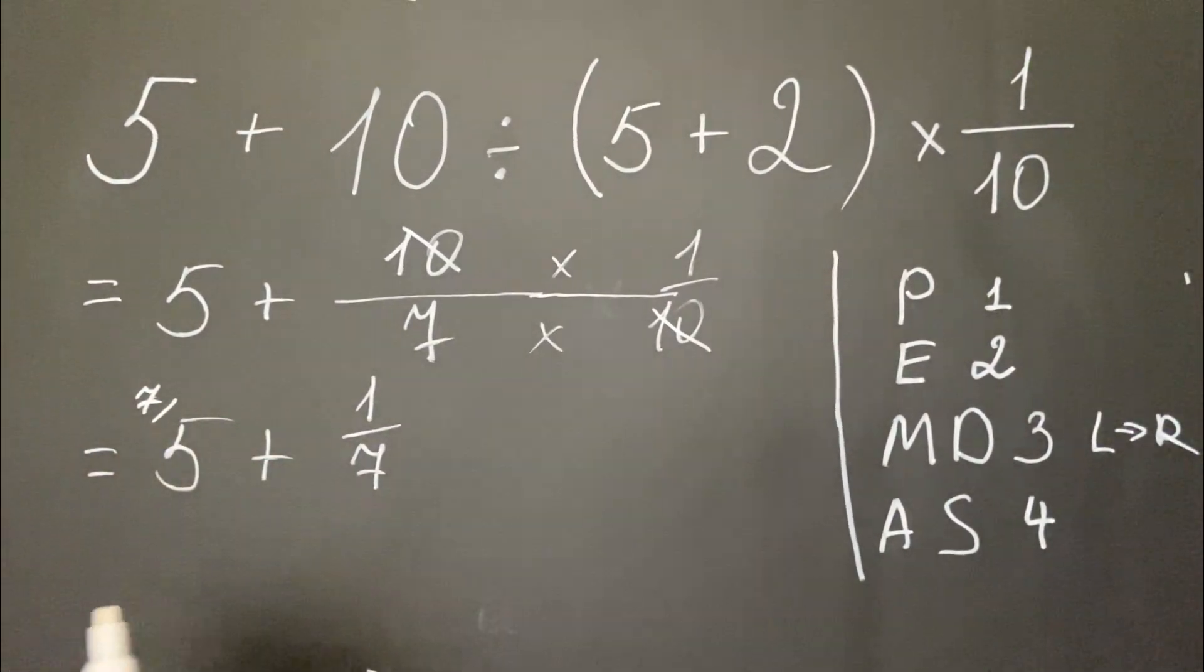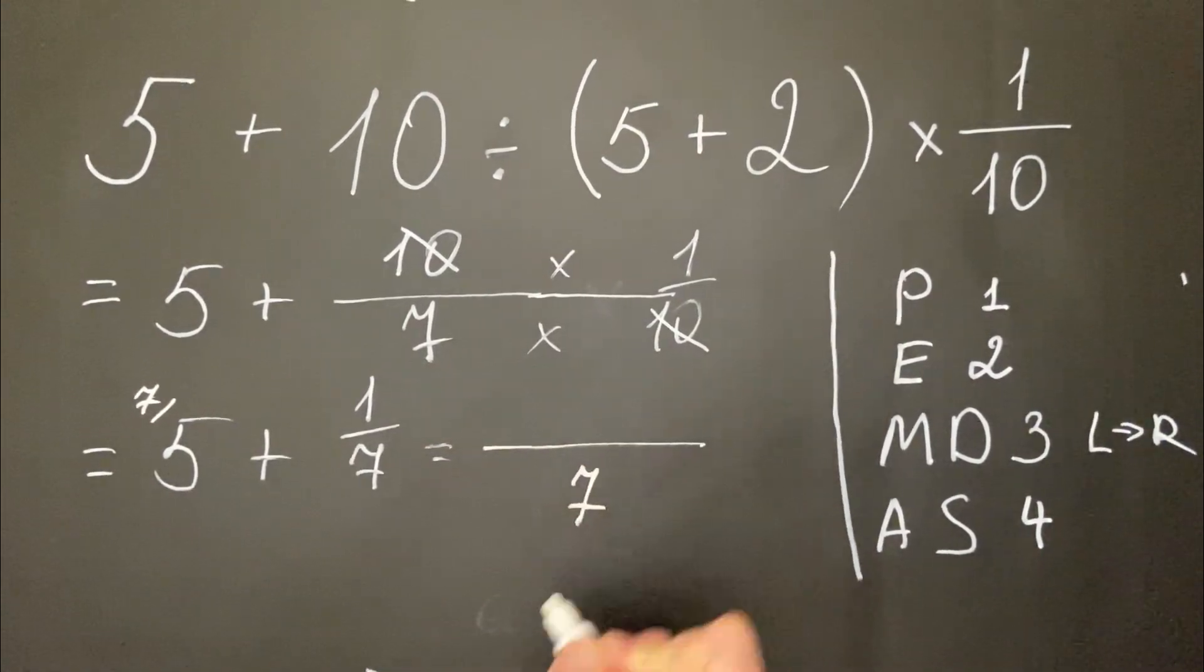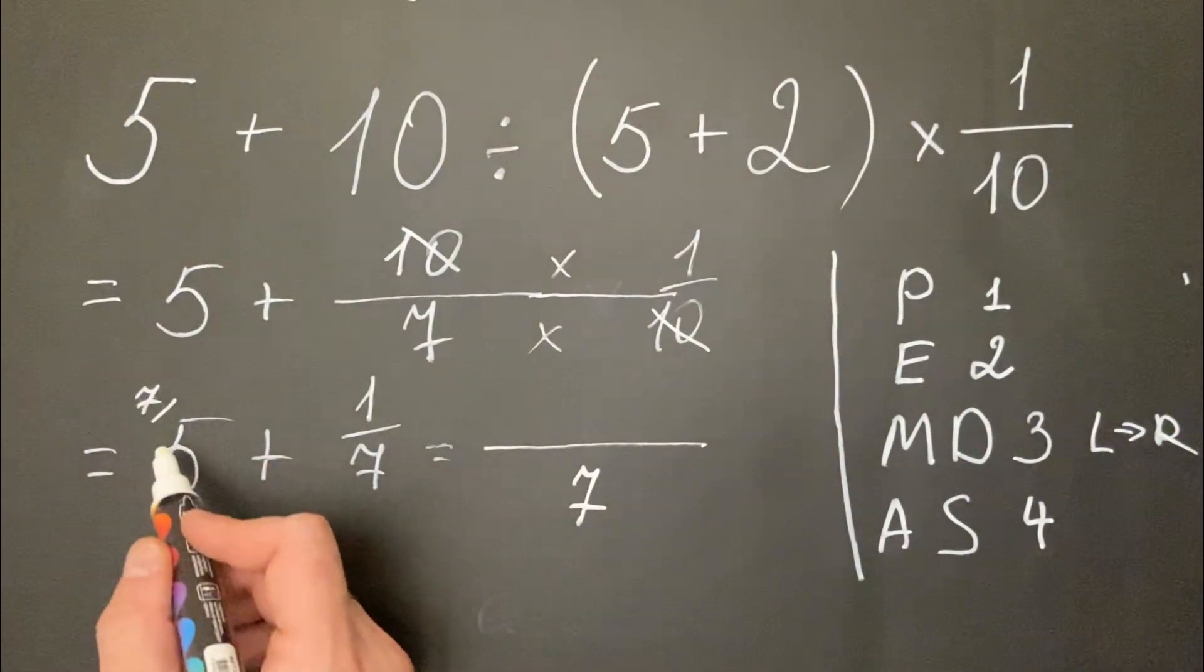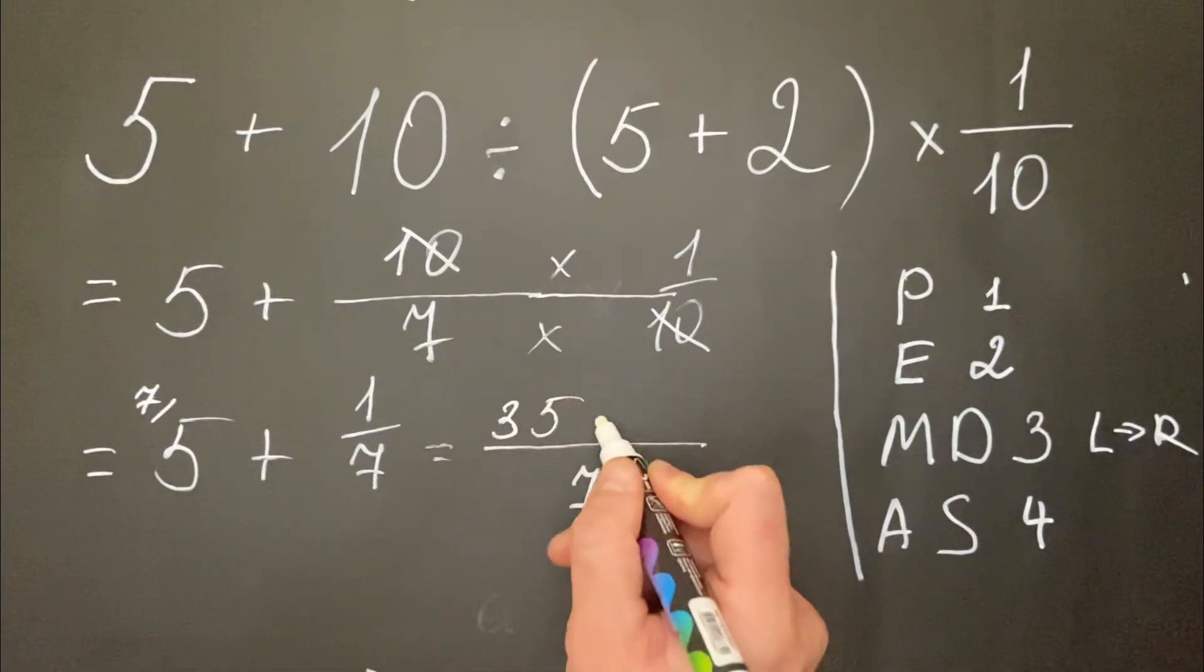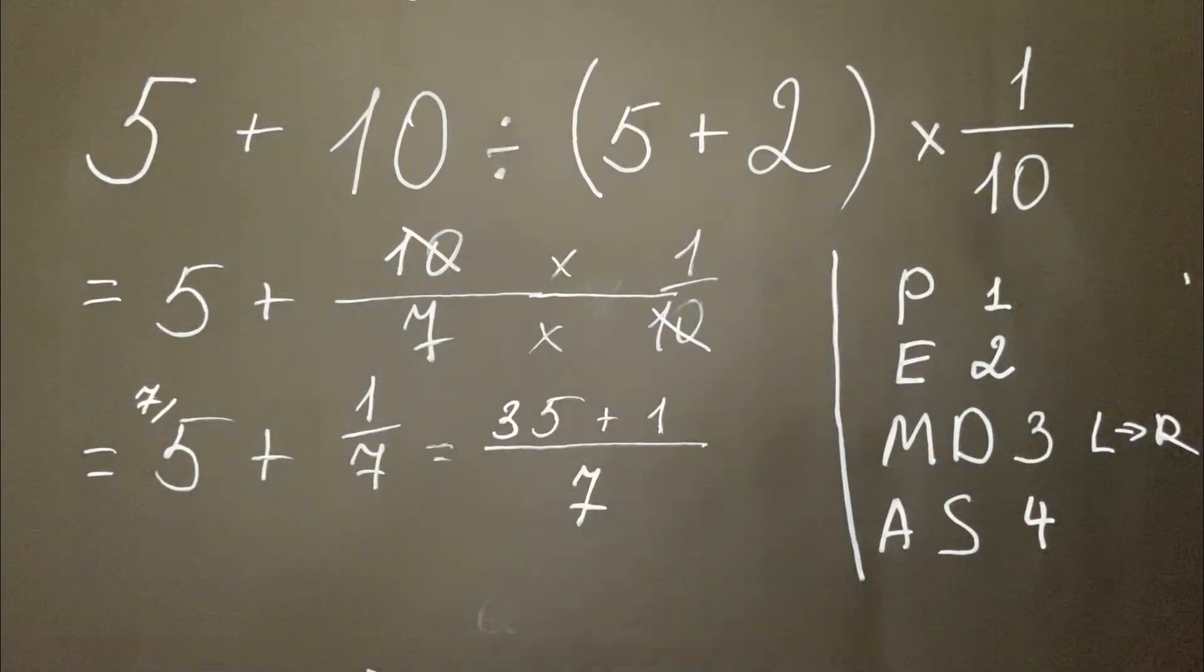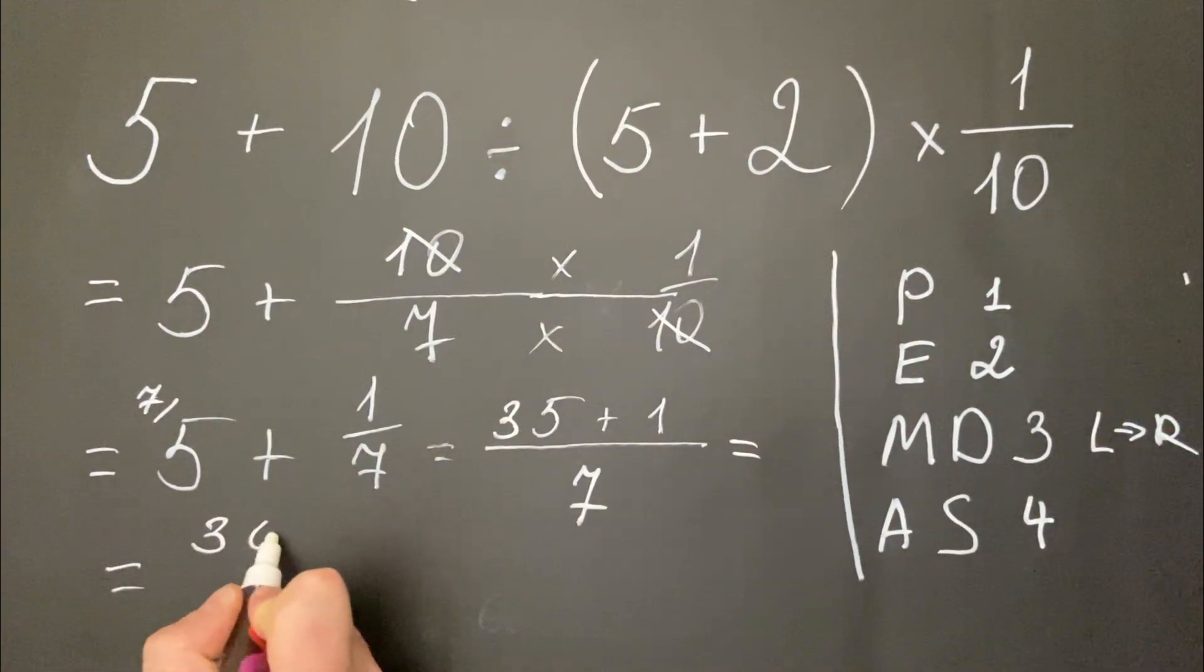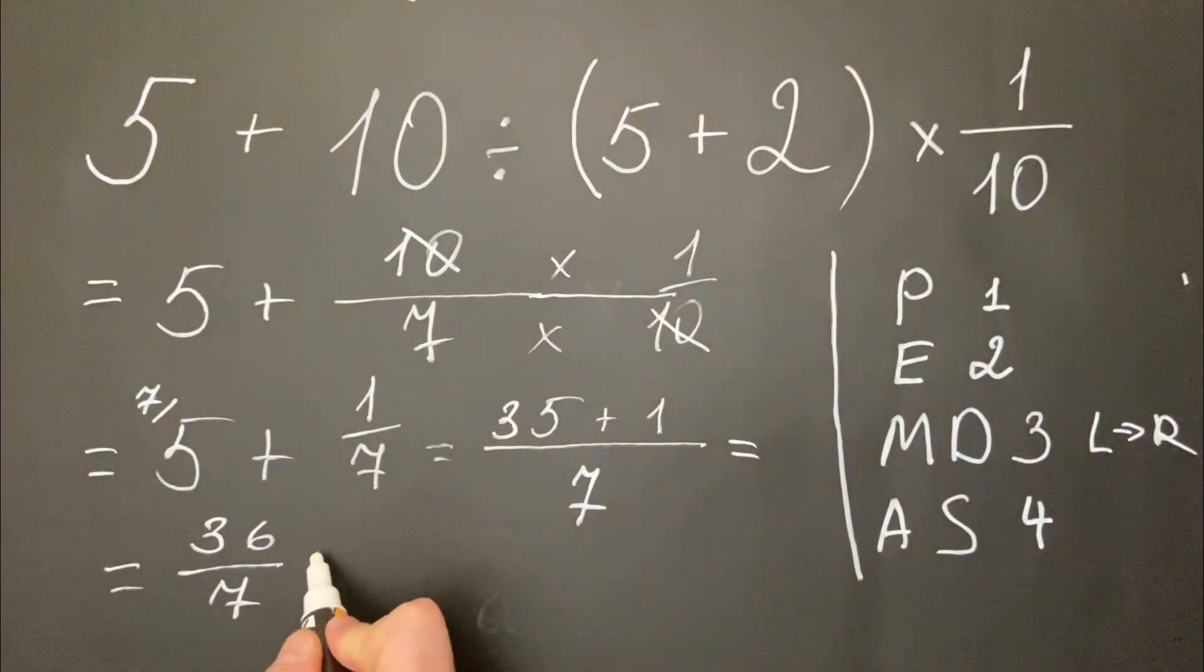So the denominator is 7. We have 5 multiplied by 7, which is 35, plus 1. The result is 36 over 7, which equals 5 and 1 over 7.